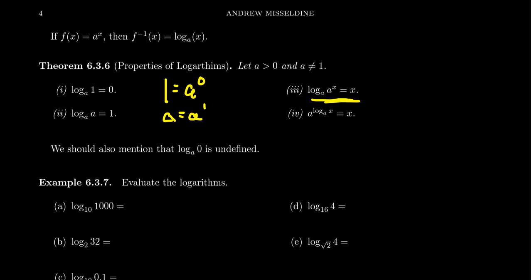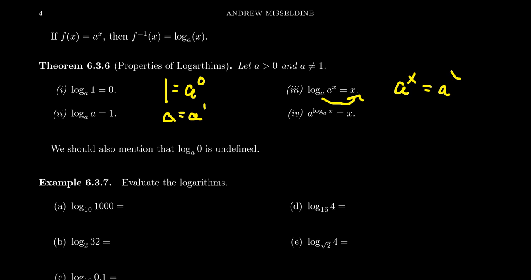If you take the log base a of a to the x, this is equal to x. Move that base a to the other side and you're left with a to the x on the left, and a to the x on the right — which is clearly true. A to the x equals a to the x. So if you take this clearly true statement and switch it to logarithmic form, you get this perhaps not-as-obvious statement: log base a of a to the x is equal to x.